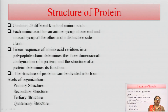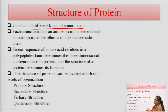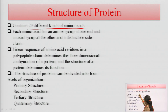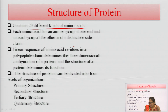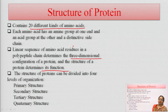The structure of protein is of four types: primary, secondary, tertiary, and quaternary. Proteins contain 20 different types of amino acids; each amino acid has an amino group on one side and a carboxyl group on the other, with a distinctive side chain. The linear sequence of amino acids forms a polypeptide chain which determines the three-dimensional configuration of the protein, and the specific structure defines its function.